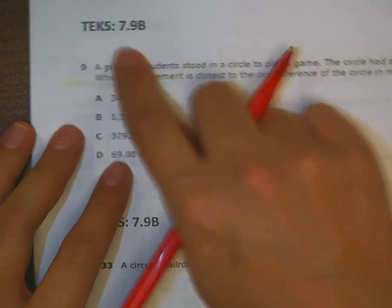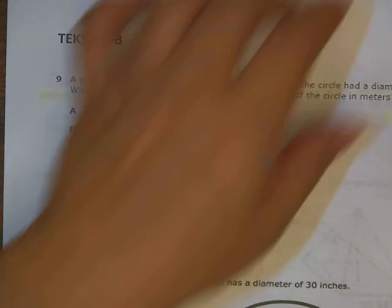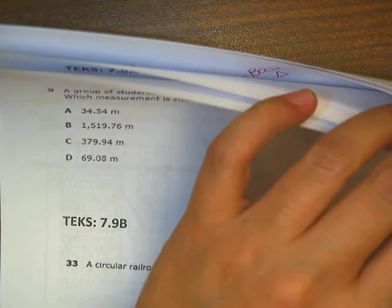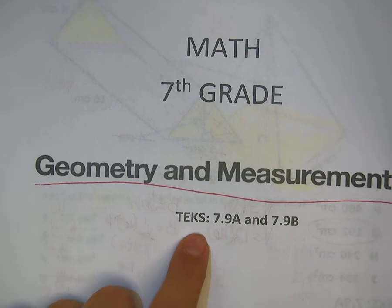Okay, now we're looking at 7-9-B. 7-9-B deals with circles and such, area of circles, and I do believe circumference. Again, this is this packet here. 7-9-B.